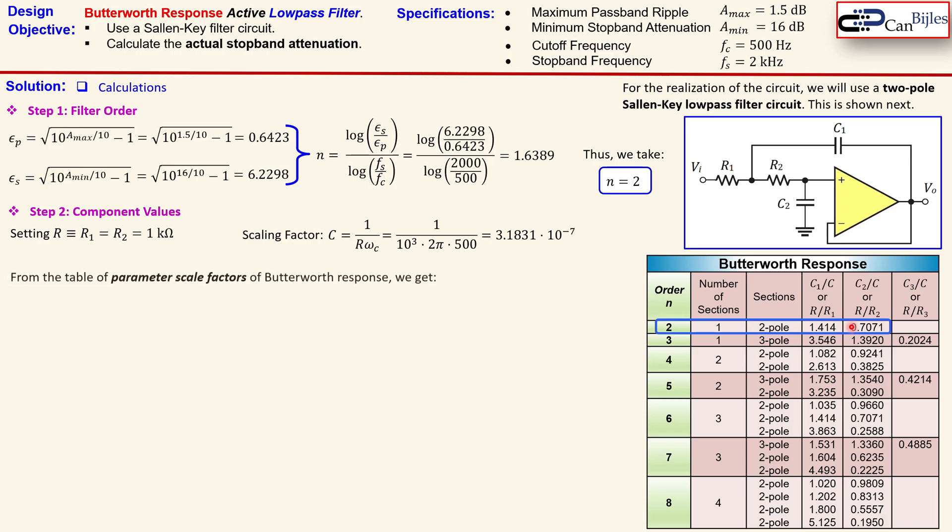So we will use that these values and we just rewrite that. So we have this C1 is equal to 1.414 times the C which is then actually our scaling factor. So if you rewrite this you get to this expression. Similar for the C2 then you have this expression.